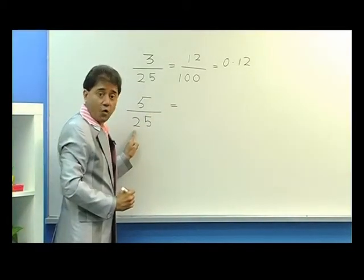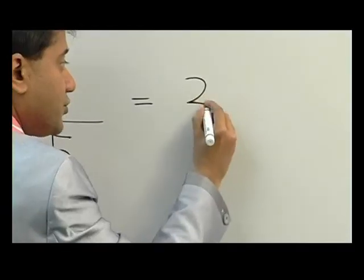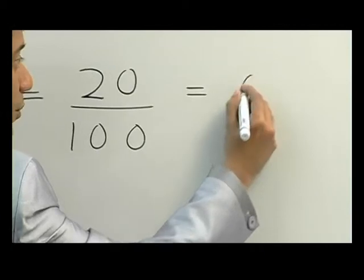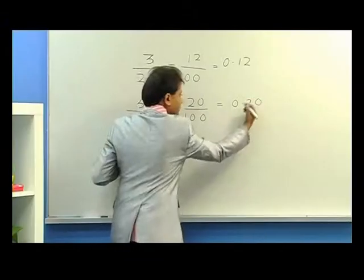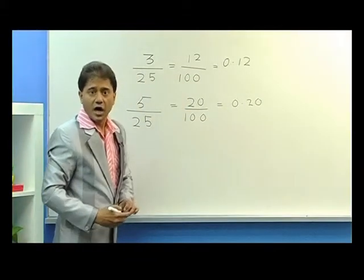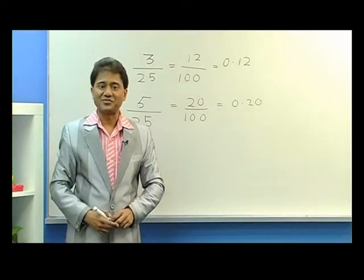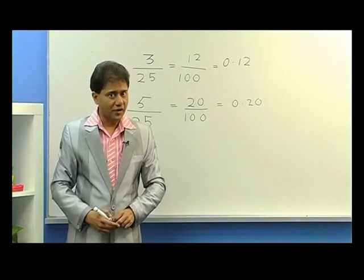Times it by four, so five times four is 20. 20 over 100 which gives you 0.20. So you saw how easy it is to divide by 25.